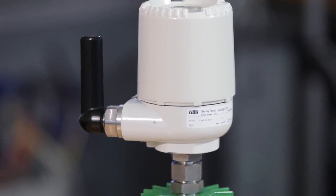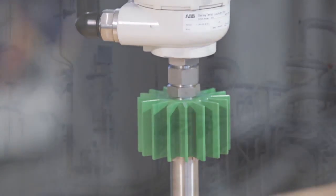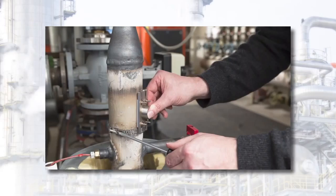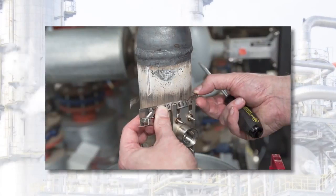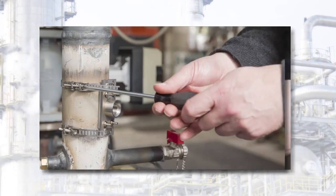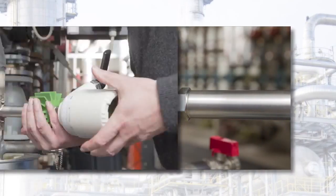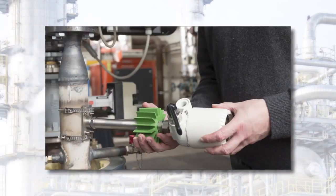The Energy Harvester installation at the pipe surface only takes a couple of minutes and can be done by just one person. Now it is really easy to install temperature measuring points even years after the original process setup and commissioning in order to optimize your process.